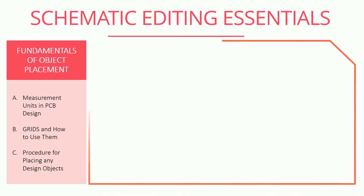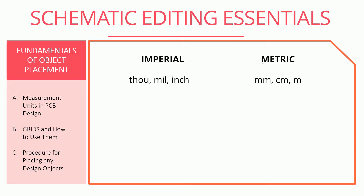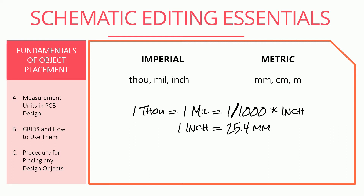Let us first discuss the measurement units in PCB design. Both imperial and metric units are used, and it is important to understand how they are related to be on the same page with PCB manufacturers, as they mostly use imperial units. Mil and thou are the most widely used imperial units in PCB design. One mil is equal to one thou, which is equal to one thousandth of an inch. One inch is 25.4 mm, which implies that one mil or thou is equal to 0.0254 mm.